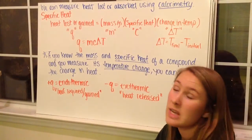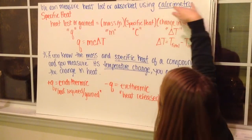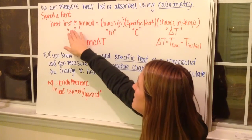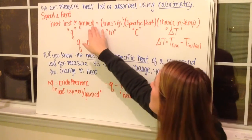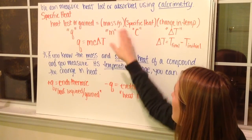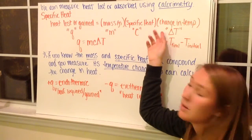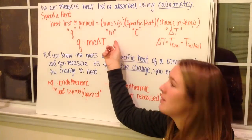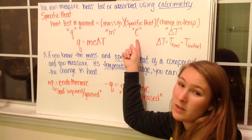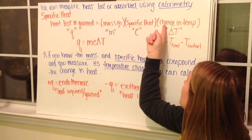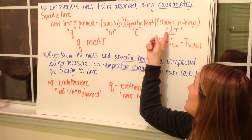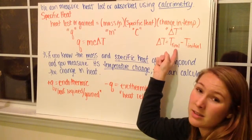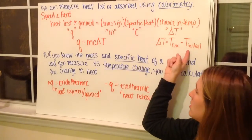We can measure heat lost or absorbed using calorimetry. The heat lost or gained can be measured by taking the mass in grams times our specific heat multiplied by the change in temperature. Our mass in grams is abbreviated as M, our specific heat is abbreviated as C, and our change in temperature is delta T. Delta means change. Delta T is T final minus T initial, or your final temperature minus your initial temperature.